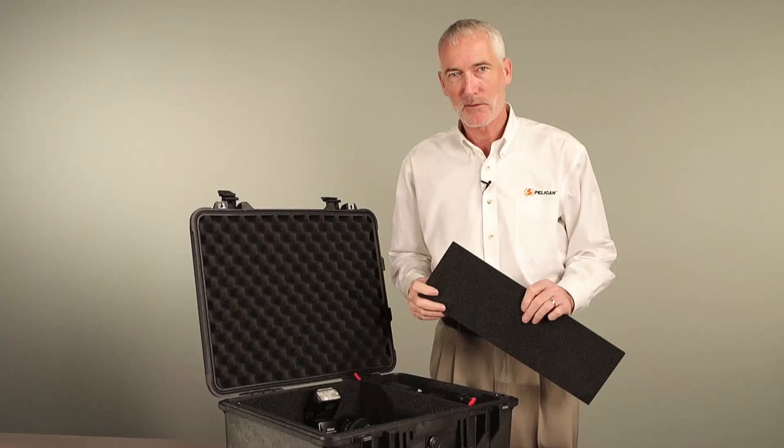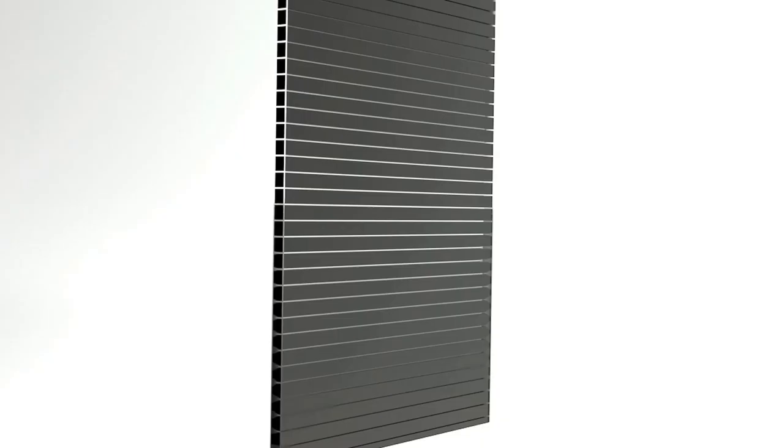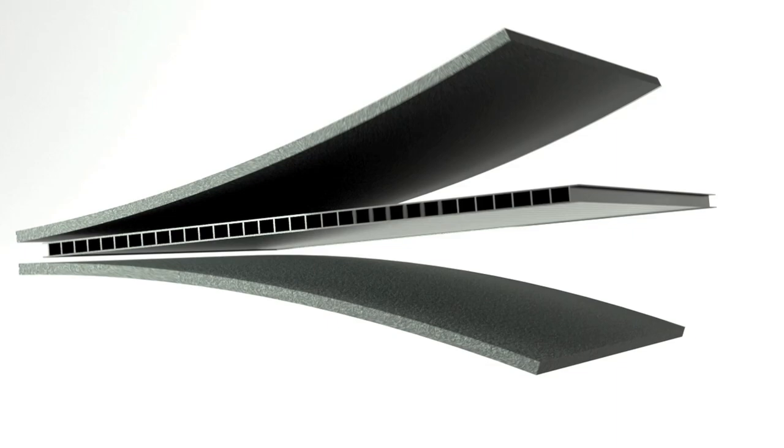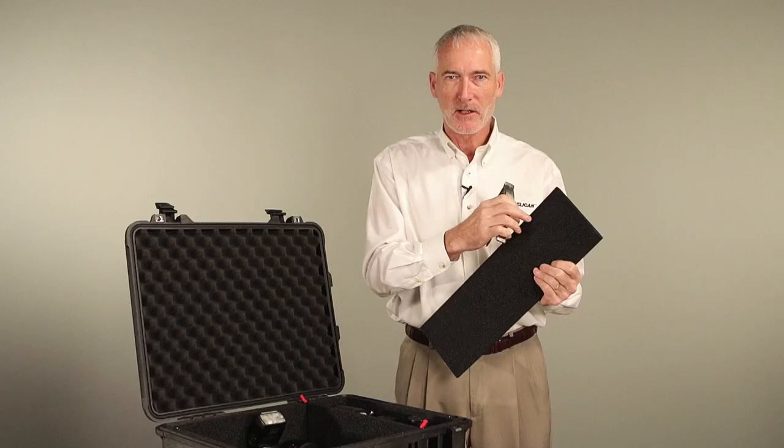The divider sections are made of a rigid plastic core, with foam laminated to both sides. It's impervious to water, and really tough, so it'll protect your gear for years.